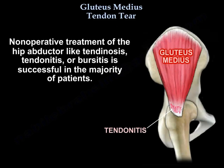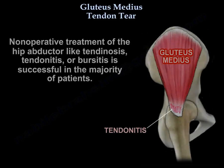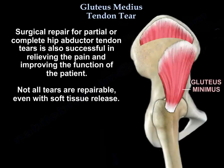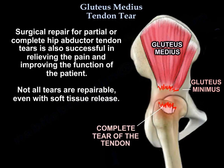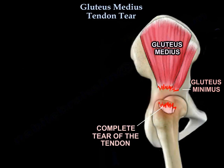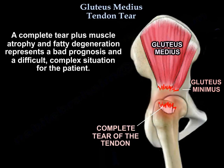Non-operative treatment of hip abductor tendinosis, tendinitis, and bursitis is successful in the majority of patients. Surgical repair for partial or complete hip abductor tendon tears is also successful in relieving pain and improving function. However, not all tears are repairable even with soft tissue release — a complete tear combined with muscle atrophy and fatty degeneration represents a bad prognosis and a difficult, complex situation.